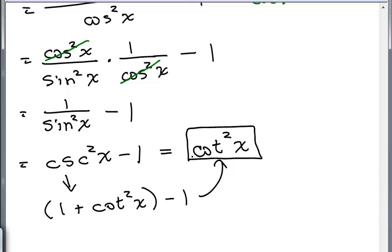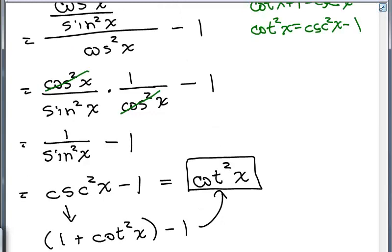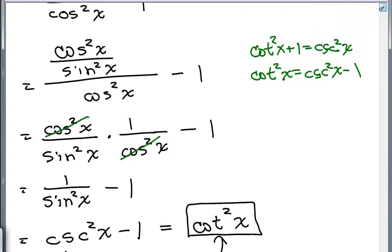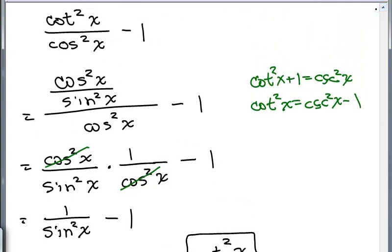And so there you go. You can see the different things that happen. When you start simplifying, you might start off on the wrong foot. And it's okay to just go back and start again. And this is again just one way of doing it. Somebody else may have looked at this 1 over sine squared x minus 1 and done something different.